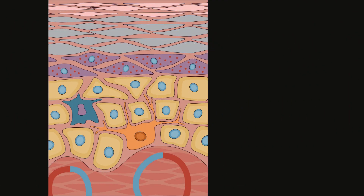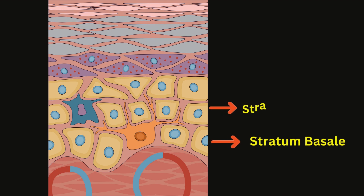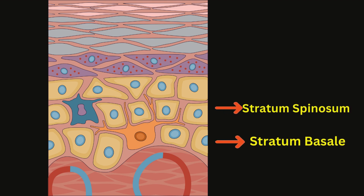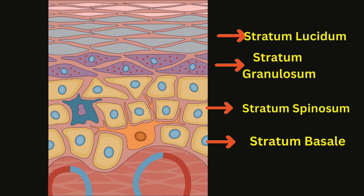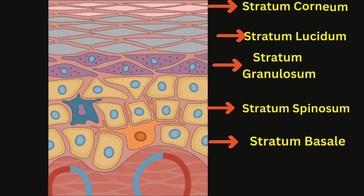The epidermis is further divided into several layers: the stratum basale (basal layer), stratum spinosum, stratum granulosum, stratum lucidum (only in thick skin), and stratum corneum.